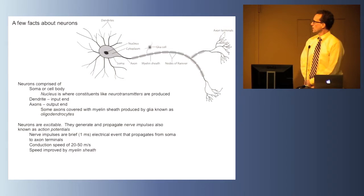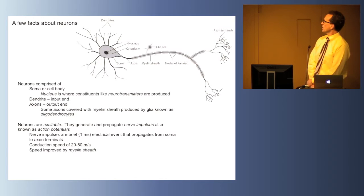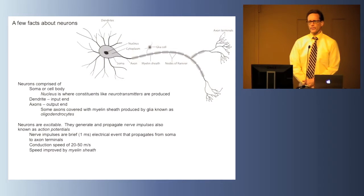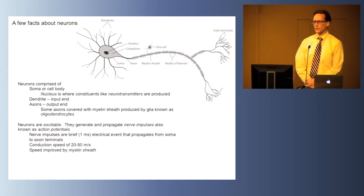Neuroscientists also refer to these nerve impulses as action potentials. These nerve impulses are brief, they occupy about one millisecond. They're an electrical event and propagate from the cell body to the axon terminals. The biophysics of this propagation are very well understood and you don't need to worry about them. The conduction speed of about 20 to 50 meters per second depends on different kinds of neurons. The speed of conduction of the nerve impulse is facilitated by the myelin sheath.